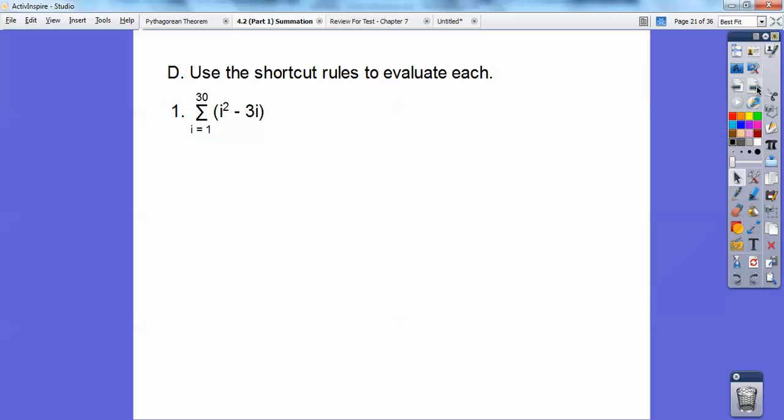Summation of i equal 1 to 30 of i squared minus 3i. So I'm going to use my formula for i squared. I'm going to pull the 3 out and use my formula for i. So separate them up like that. And then there's my formula. So here's my formula for i squared. Here's my formula for i.